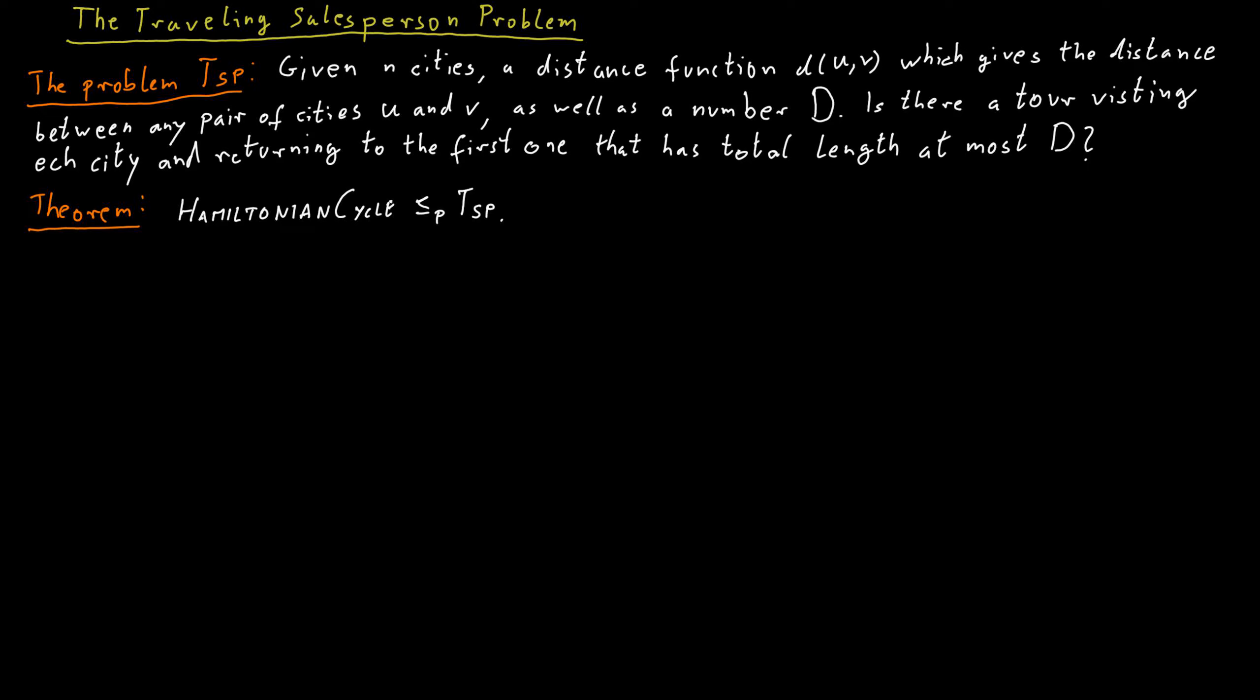The proof is rather simple. So in Hamiltonian cycle, we have a graph. In the traveling salesperson problem, we have these cities. We can interpret these cities as vertices and then connect two cities by an edge and then have an edge length that corresponds to the distance between those cities.